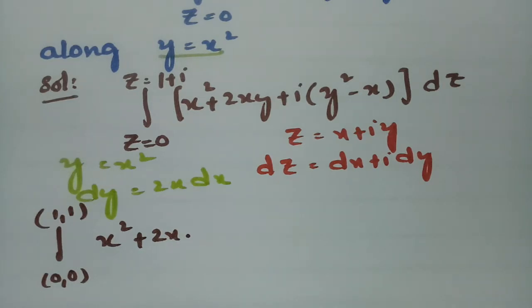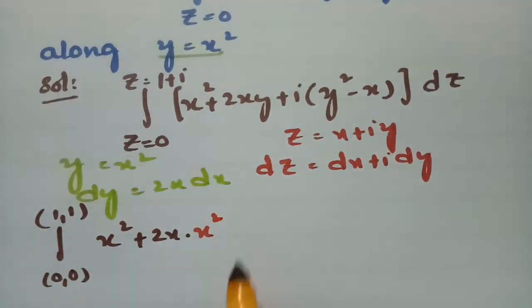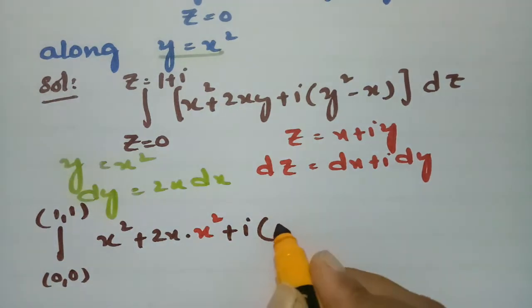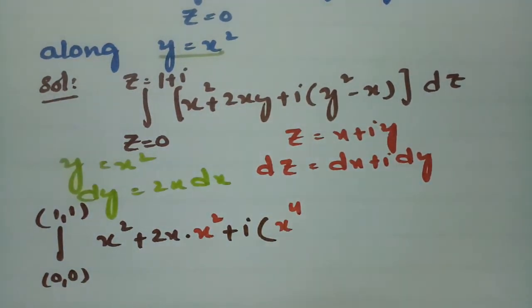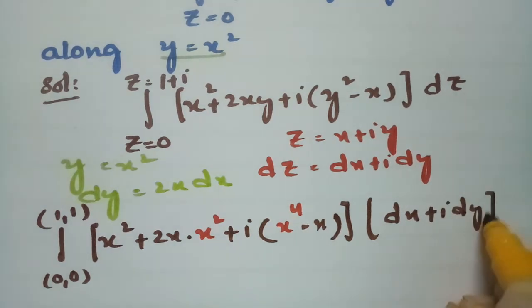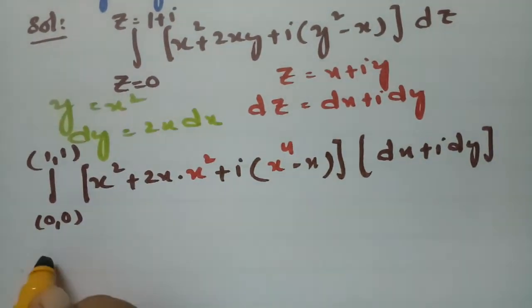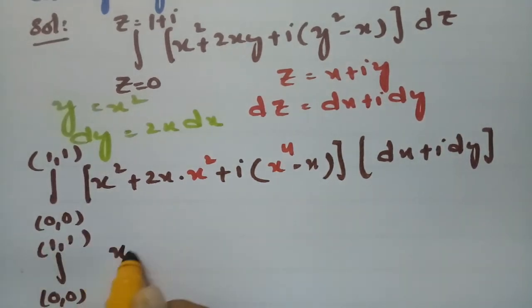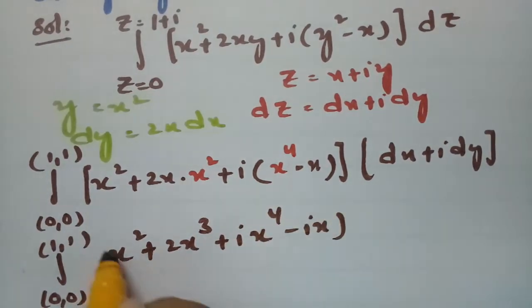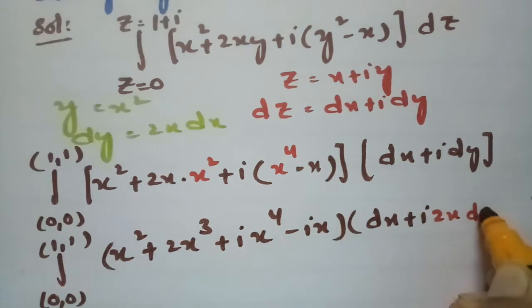Now substituting y = x², y² = x⁴, and dy = 2x dx into the integral. The integrand becomes (x² + 2x³) + i(x⁴ − x), and dz = dx + i(2x dx). So we have the integral from 0 to 1 of [(x² + 2x³) + i(x⁴ − x)](dx + 2ix dx).